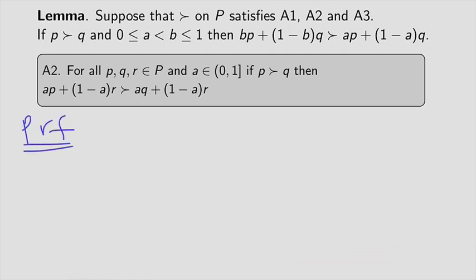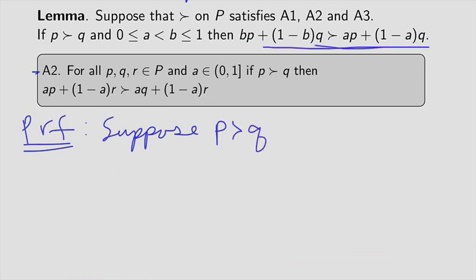We're going to suppose that the agent has a preference relation on p and it satisfies A1 and in particular A2, which is what we're going to need. We suppose the agent strictly prefers lottery p over q, and we want to derive that the agent strictly prefers this compound lottery over the other. We're going to start with a simple case: suppose that a is actually equal to 0.